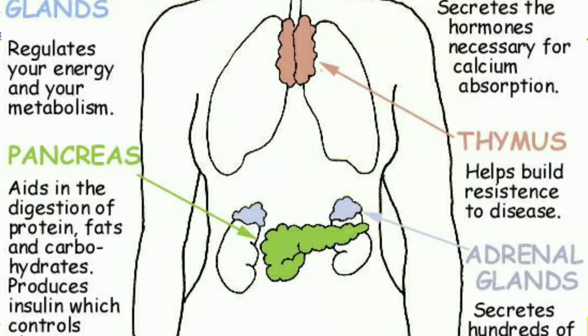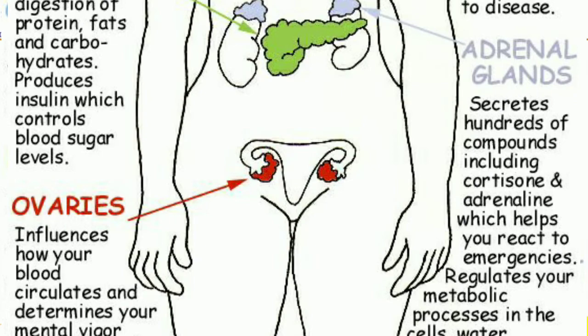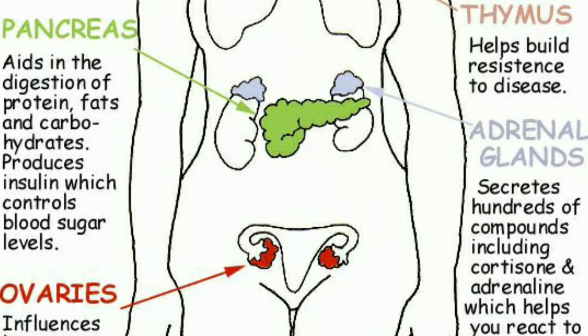The sixth is the thymus, located in the upper torso. The thymus is active until puberty and produces hormones important for the development of a type of white blood cells called T-cells. The seventh is the adrenal gland. One adrenal gland can be found on top of each kidney. These glands produce hormones important for regulating functions such as blood pressure, heart rate, and stress response.